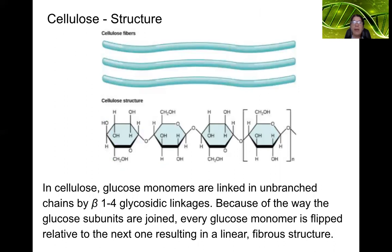Cellulose is not used for long-term energy storage — it's used for structure. Cellulose makes up a large portion of plants' cell walls, providing structure and support. The glucose monomers are linked in unbranched chains by beta-1,4 glycosidic linkages, using beta glucose, not alpha. Because of how the glucose subunits are joined, every glucose monomer is flipped relative to the next one, resulting in a linear fibrous structure — long and very strong fibers.